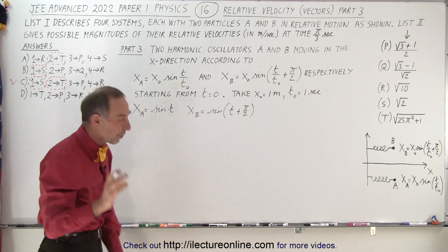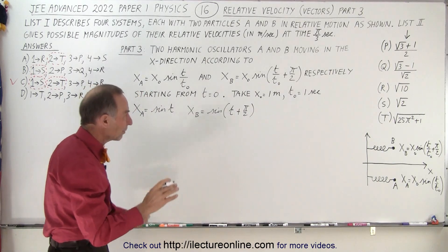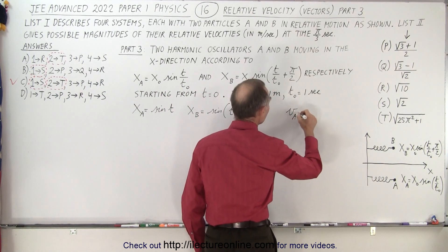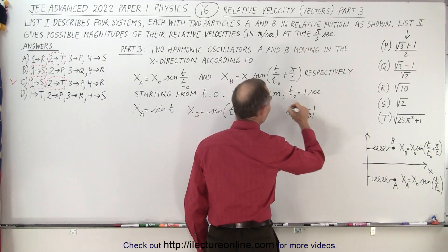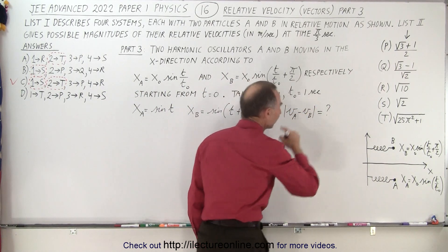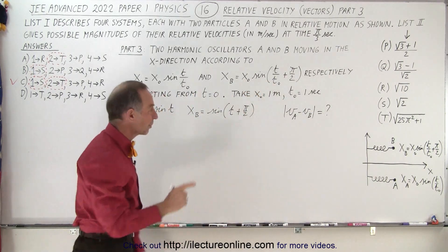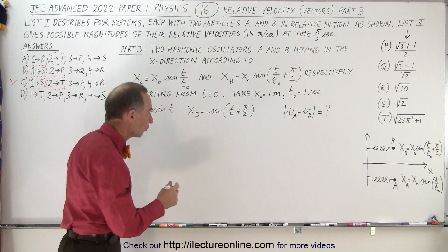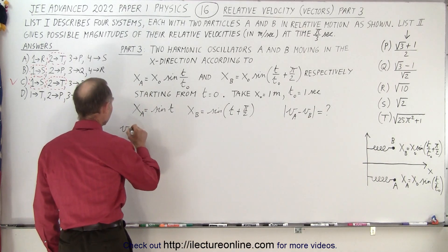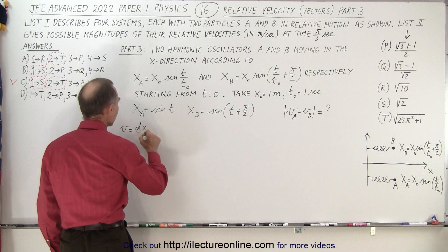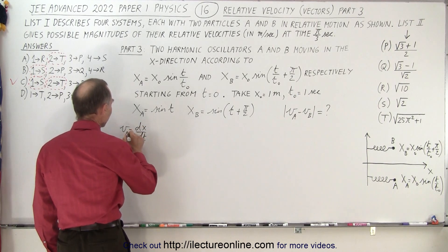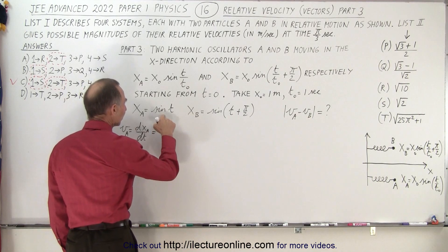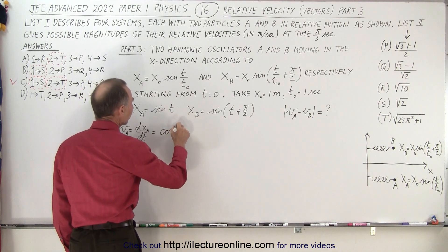Now remember, since we're trying to find the magnitude of the relative velocities, we're trying to find vA minus vB in the absolute value. Since we're given the position, what we're going to do is take the derivative of those two functions to find the velocity, because we know that the velocity is equal to dx dt. And so in this case, velocity of a is equal to dx sub a dt, and so the derivative of the sine is equal to the cosine of t.